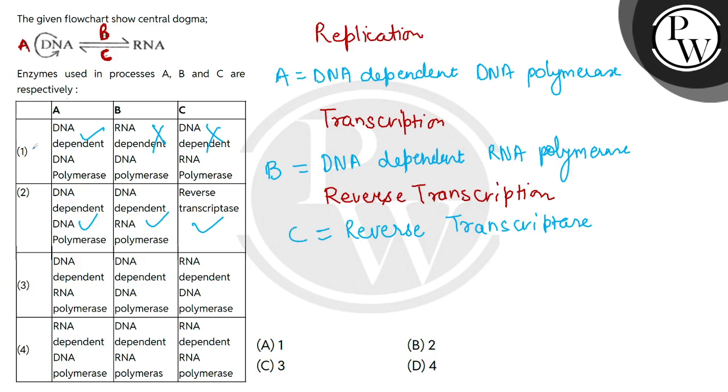2 will be done. Let's see 3, here DNA-dependent RNA polymerase, so this is wrong. Here RNA-dependent DNA polymerase, so this is wrong. So what is the correct answer? The correct answer will be option number B, which we have 2 here.